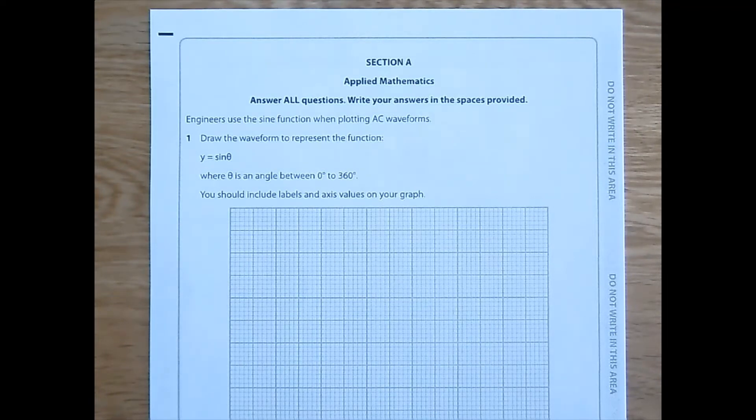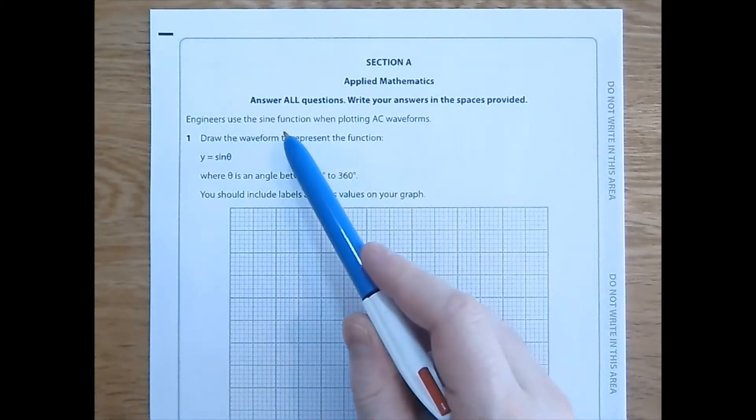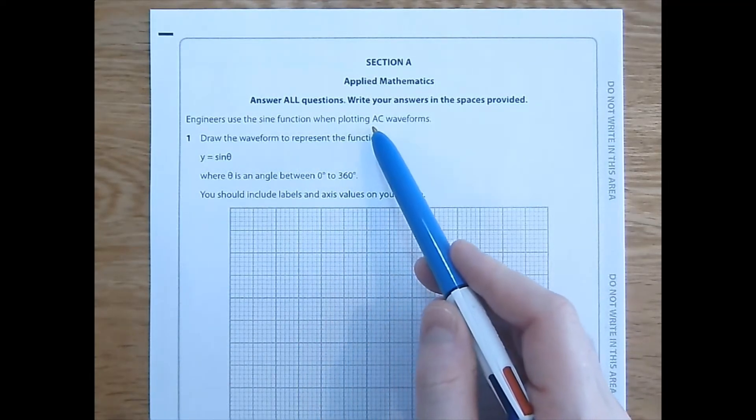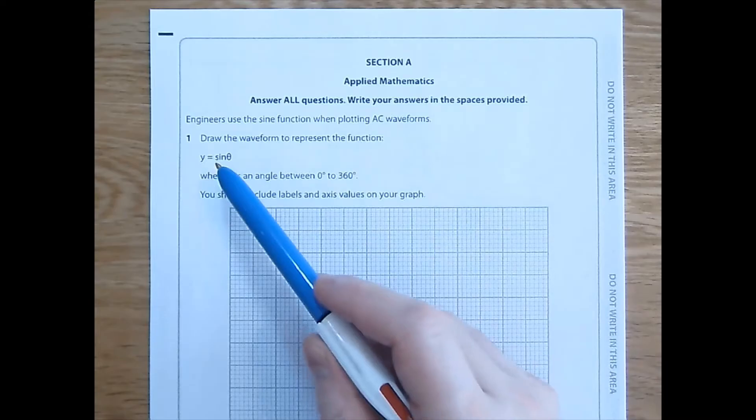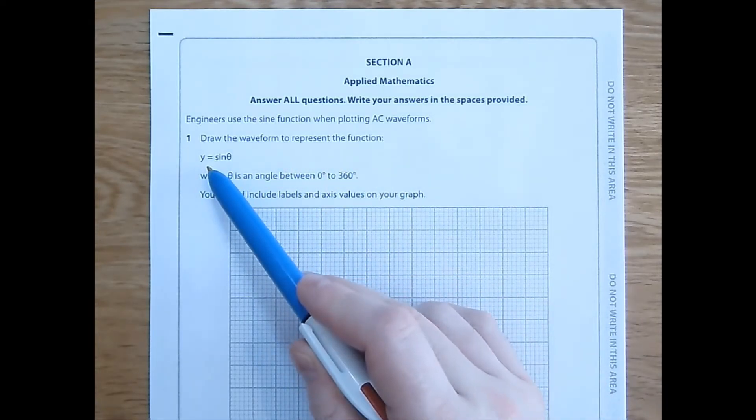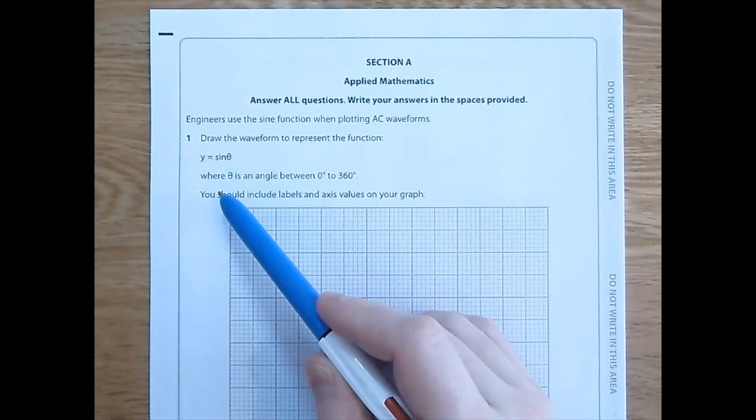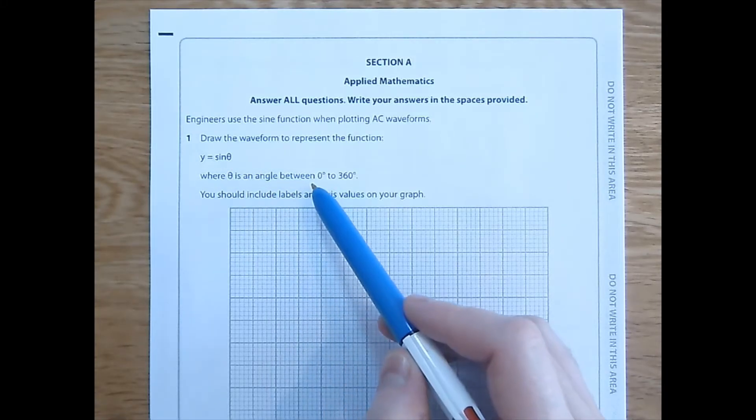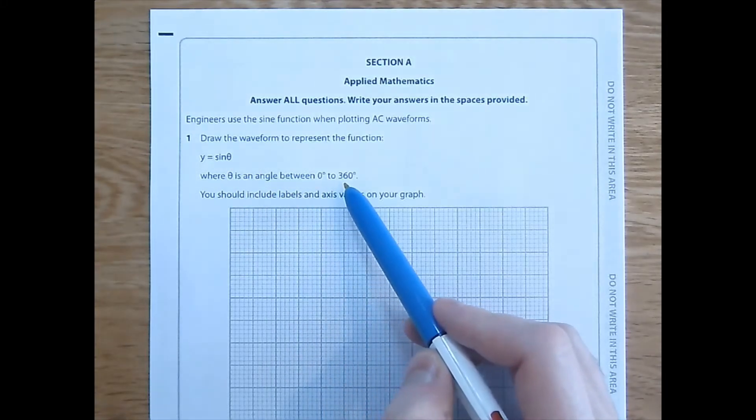June 2019, question 1. Engineers use the sine function when plotting alternating current waveforms. Draw the waveform to represent the function y equals sine theta, where theta is an angle between 0 degrees to 360 degrees.